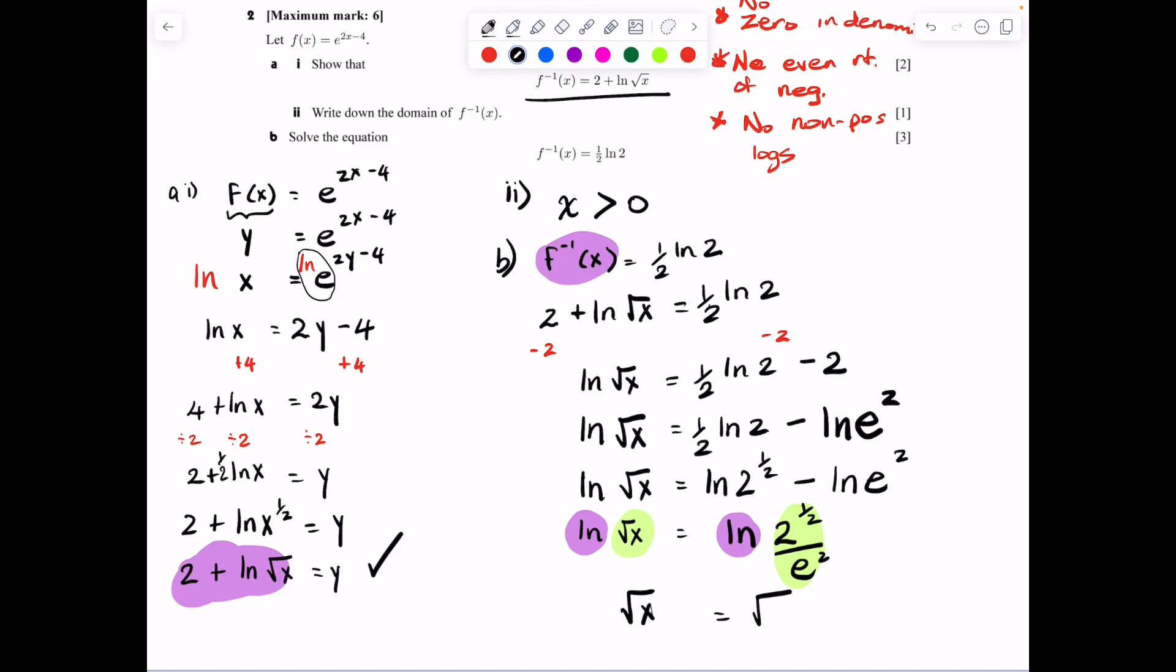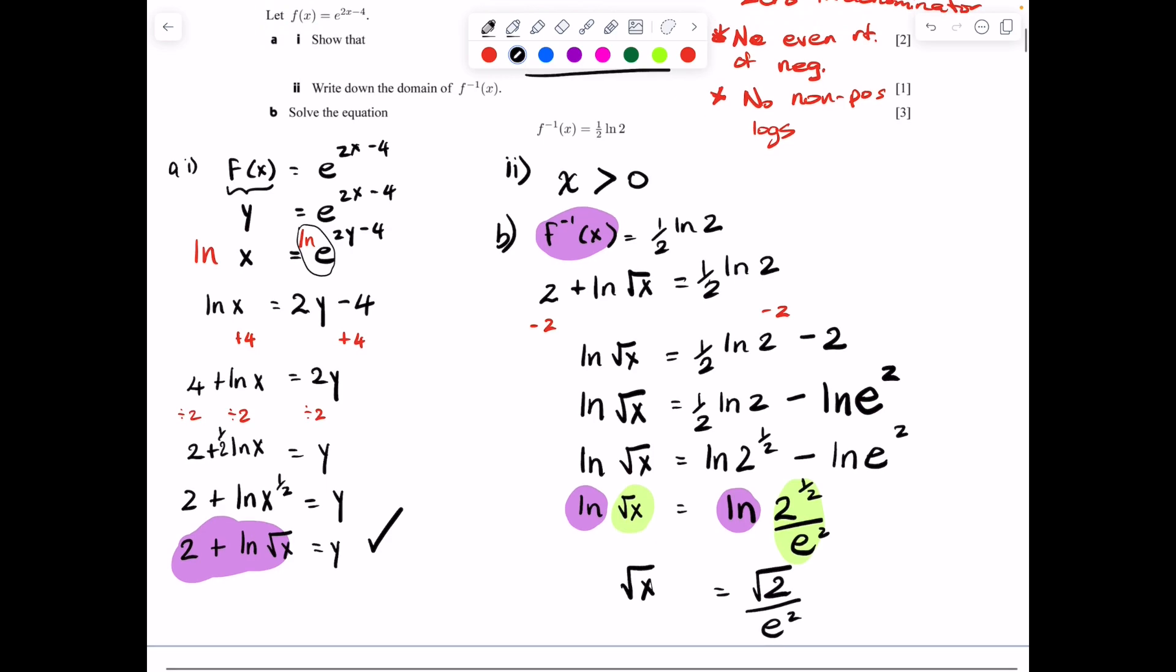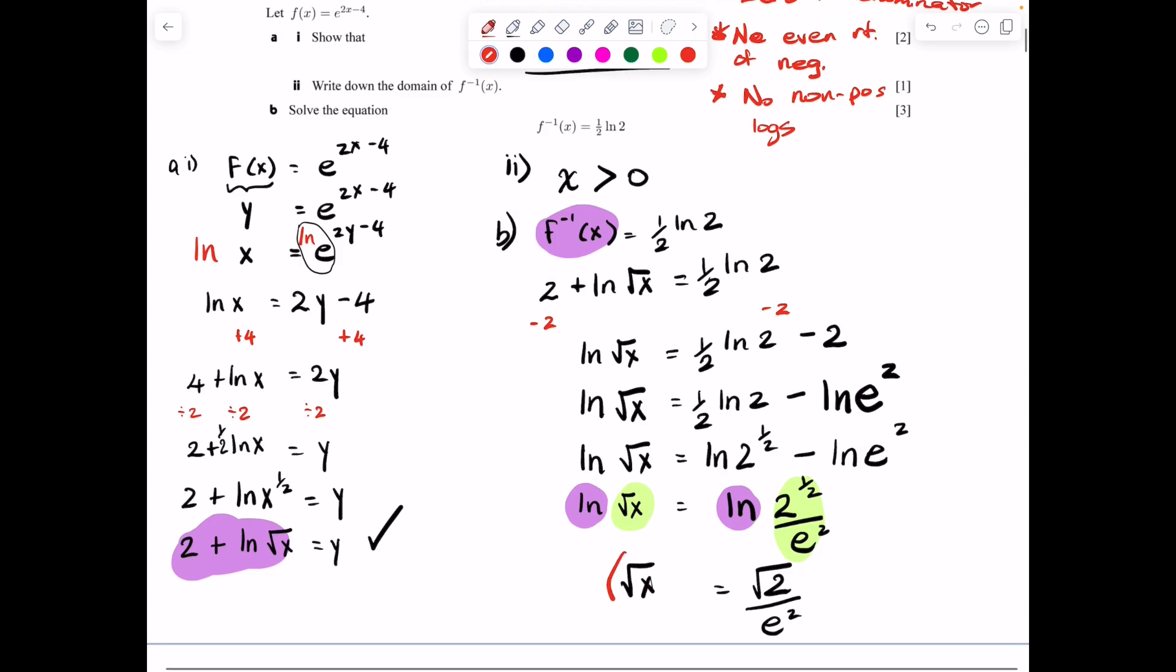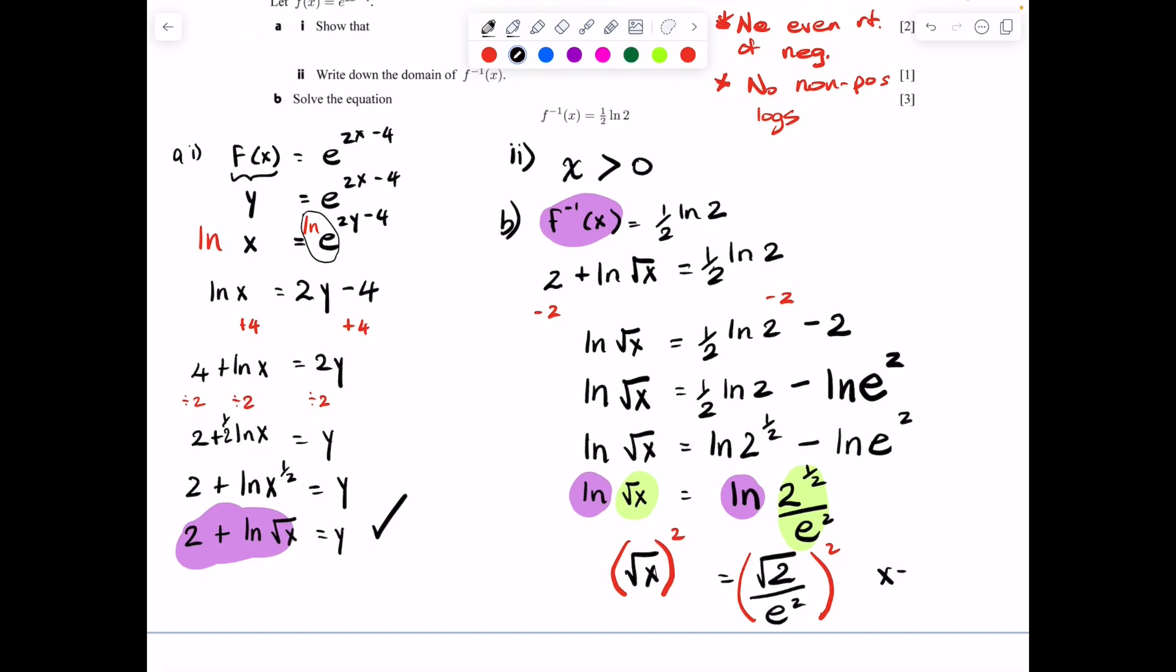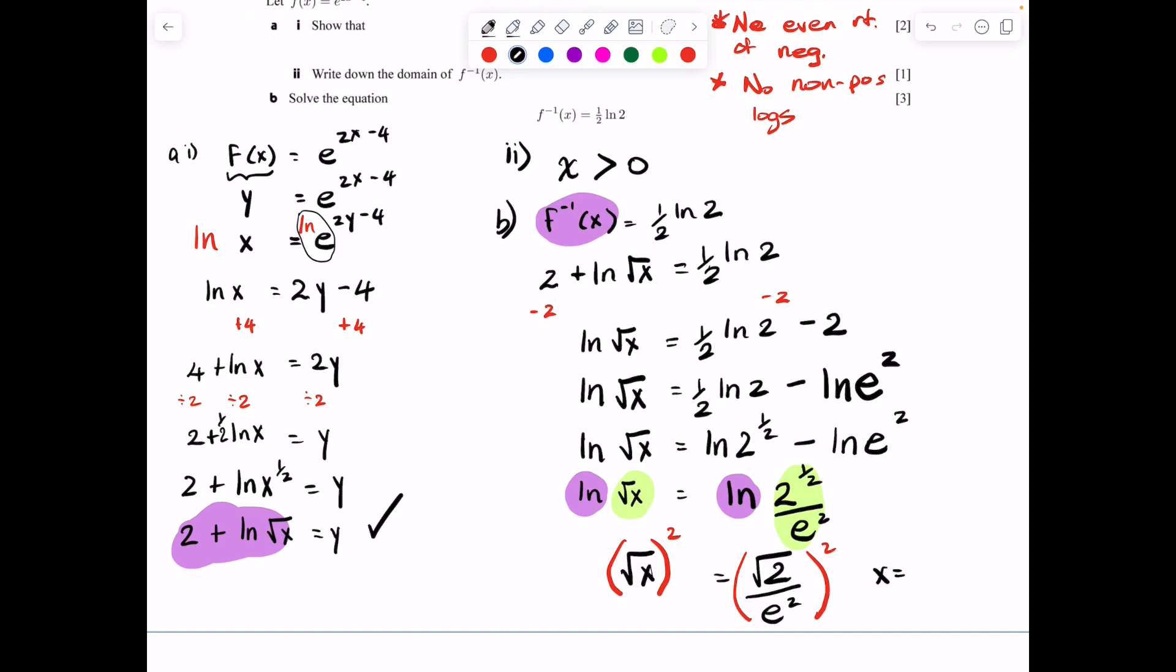Our final step here, if we want x alone, is to do the opposite of square rooting x, which is squaring x. So we're going to square that whole expression. And we end up getting that x = √2 squared is just 2 over e^2 to the second power is e^4. And that is our final answer. We have solved for x. And that's that full IB question. Hopefully that helped.